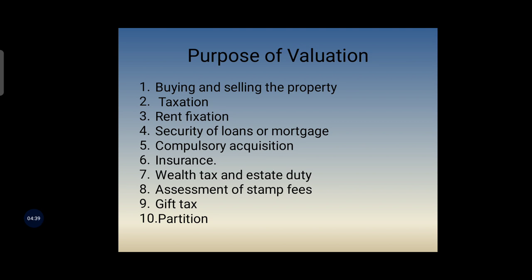The fifth purpose is compulsory acquisition. When the government desires to acquire land or property for public interest, a suitable amount is paid to the owner as compensation. The amount of compensation is decided on the basis of valuation of the property. The sixth purpose is insurance — for getting insurance of a property, the owner has to get the property valued, and to grant insurance and fix premiums, valuation of the property is necessary.